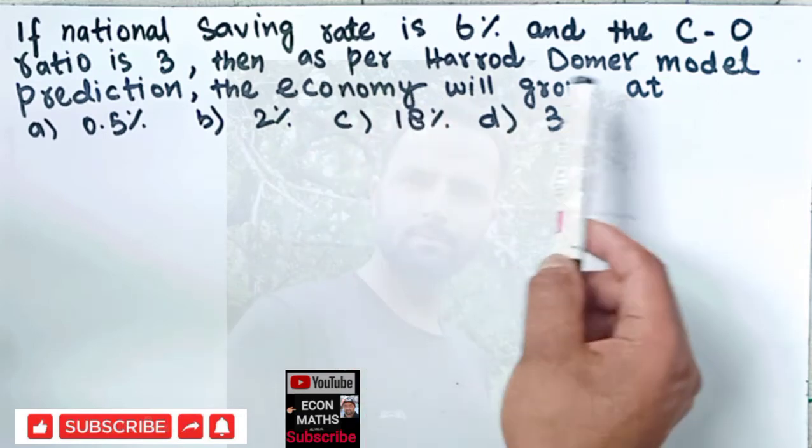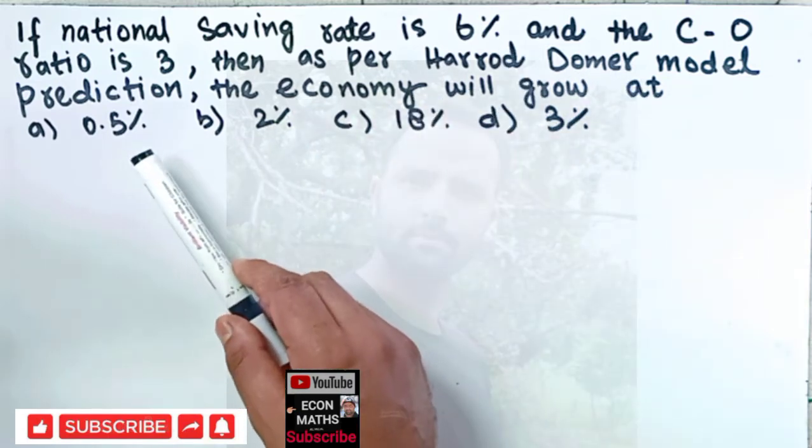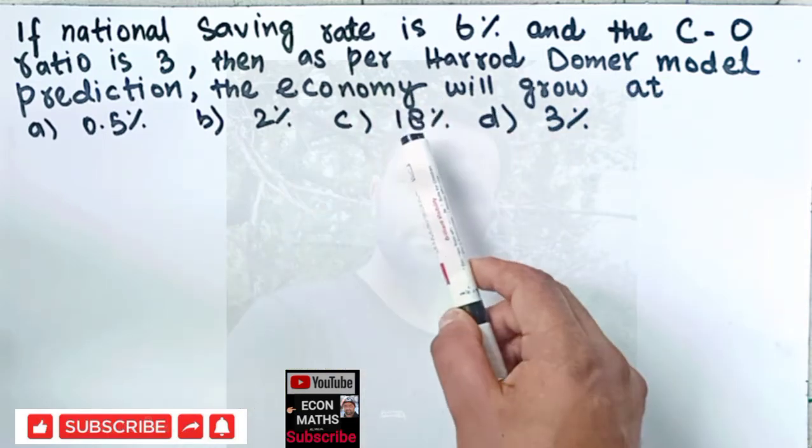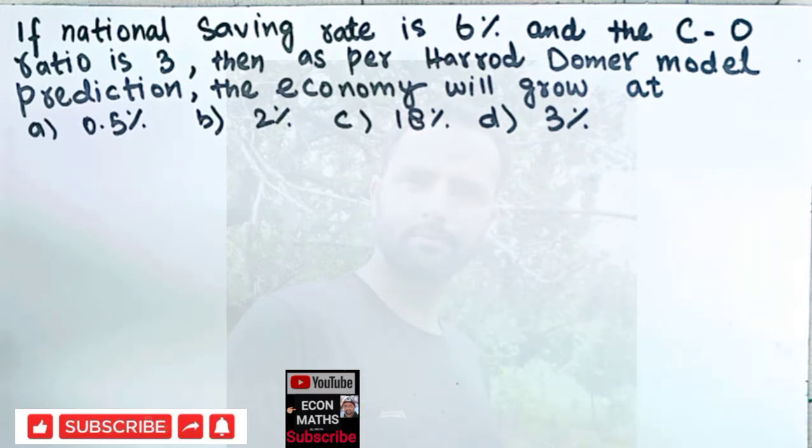The options are 0.5%, 2%, 18%, or 3%. In the earlier video we derived the growth equation for Harrod-Domar model.